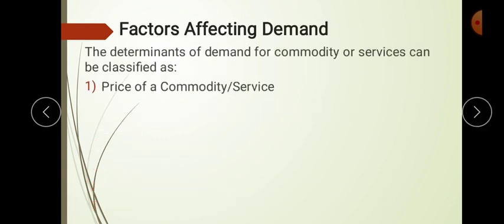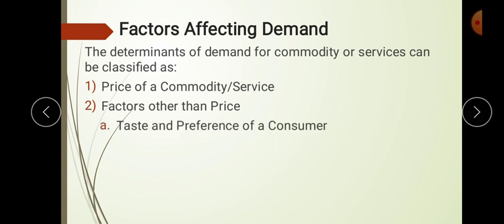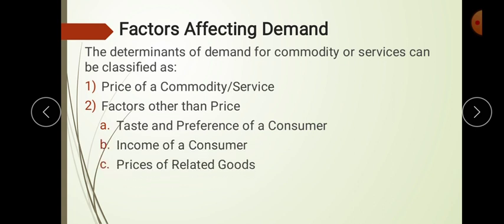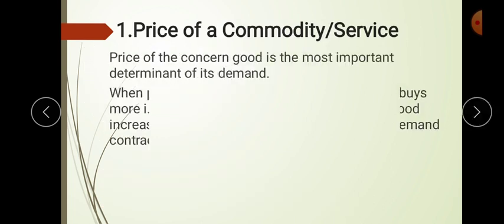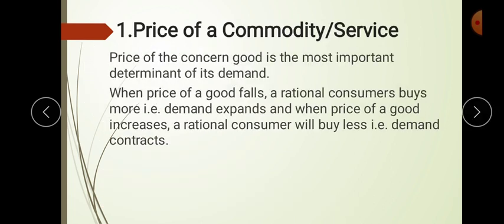Whenever a question asks about factors affecting demand, you have to go with two things: first, price of a commodity or service, and second, factors other than price. Other than price includes taste and preference, income of a consumer, price of related goods, expectations about future prices, and the size and demographic profile of the population — nearly six points. Price of related goods further consists of substitute goods and complementary goods.